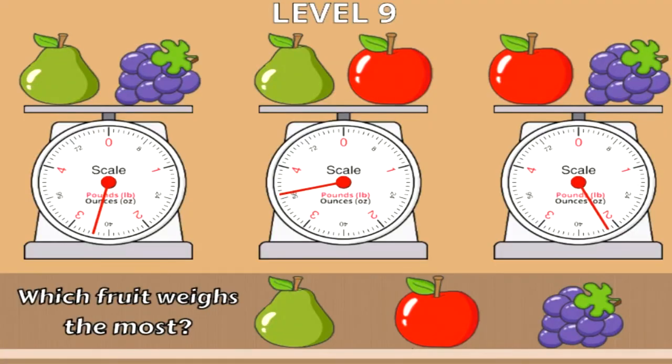That brings us to level nine where we can see that there's two fruit on each scale and none of them are the same. The way we would figure this one out is if we look at the first and second scale, they both have a pear on it. One has a pear and a grape, another one has a pear and an apple. The combined total of it weighs more will tell you which one of the grape or the apple weighs more. You can tell that the apple and the pear weighs quite a bit more than the pear and the grapes, so we know that the apple weighs more than the grape.